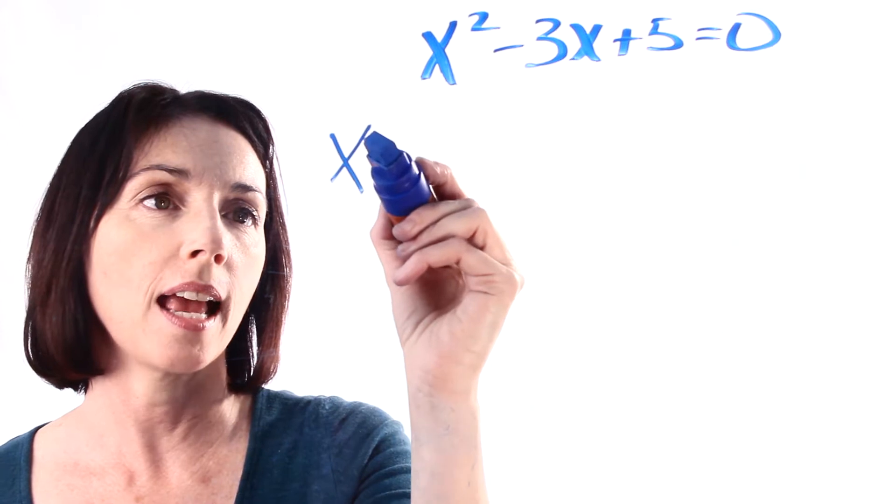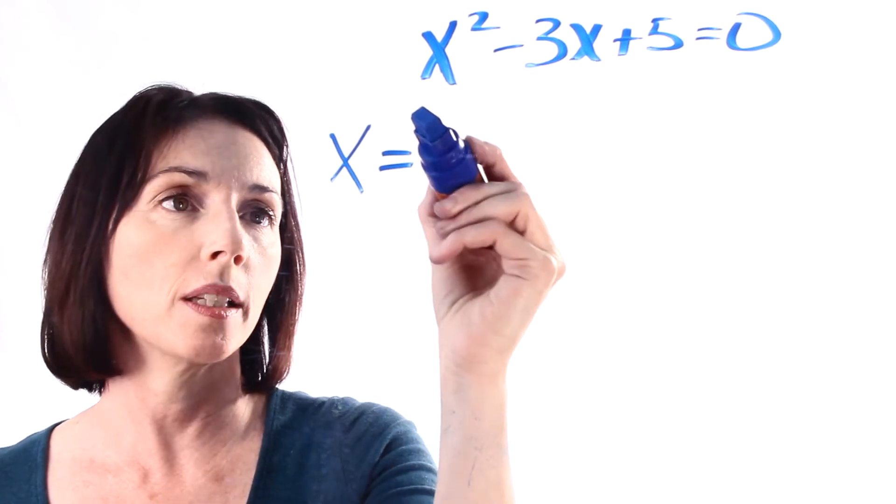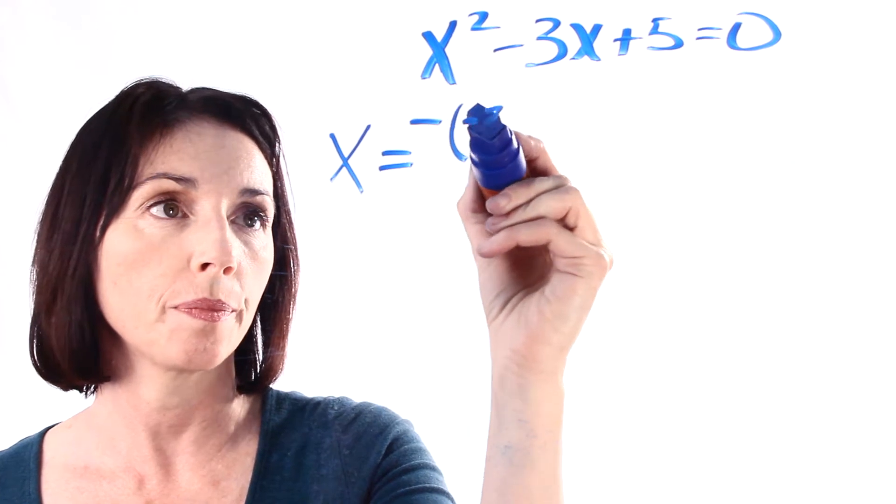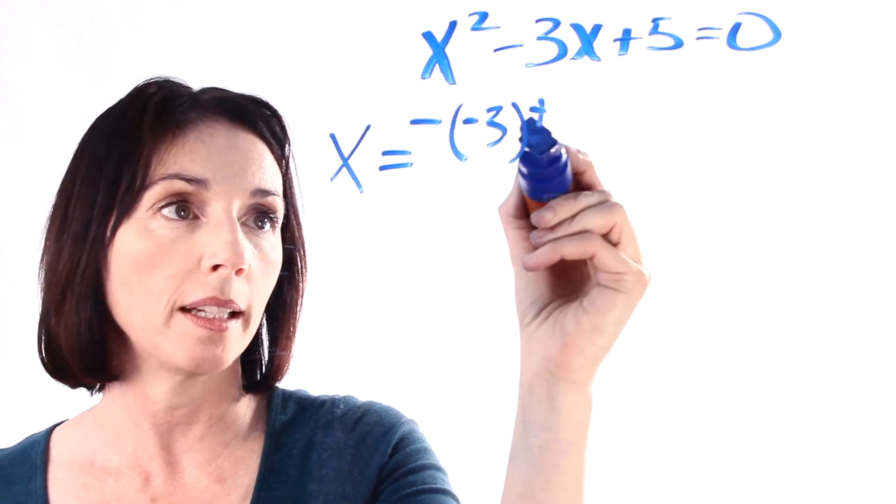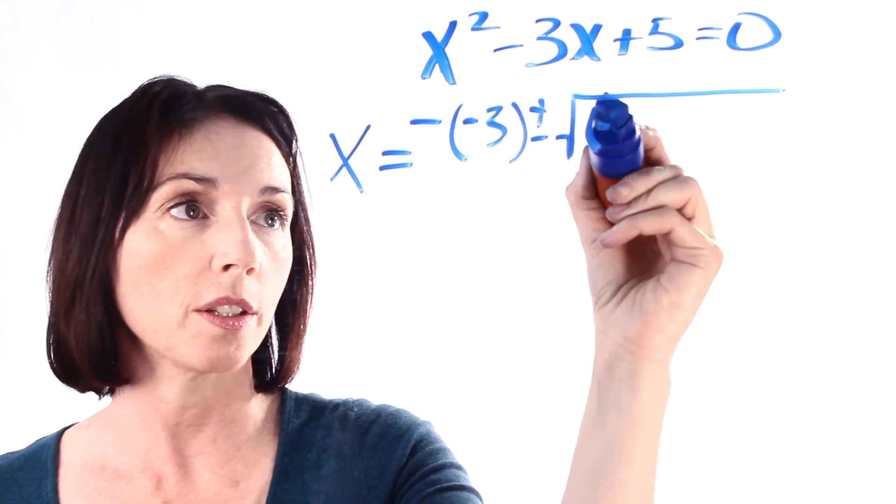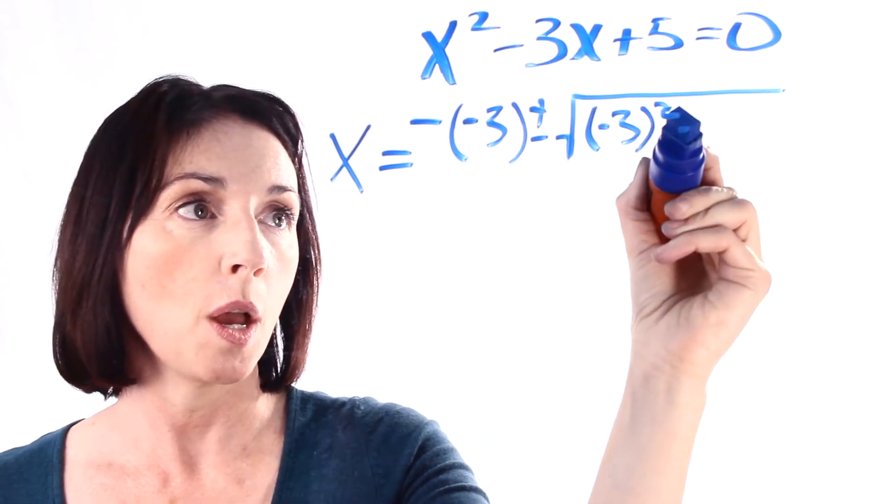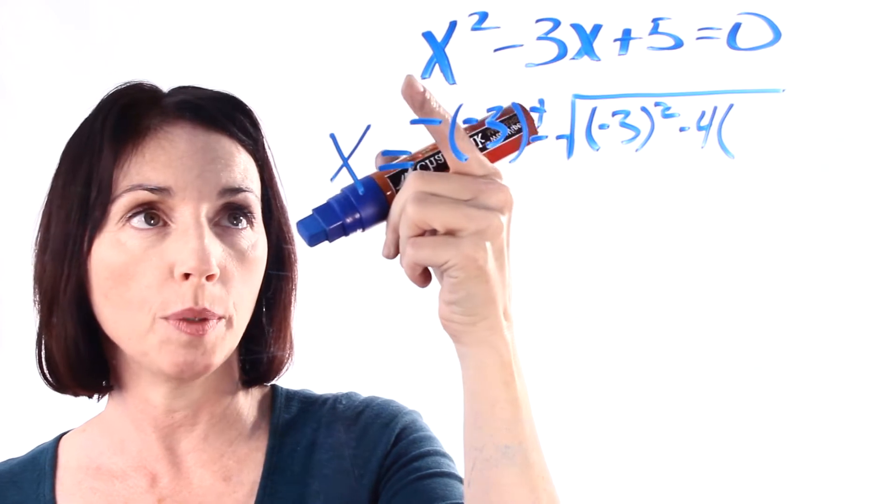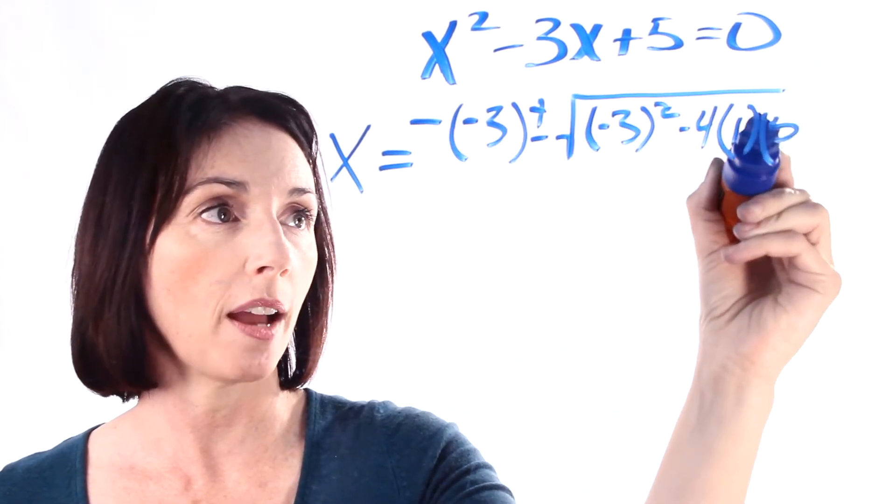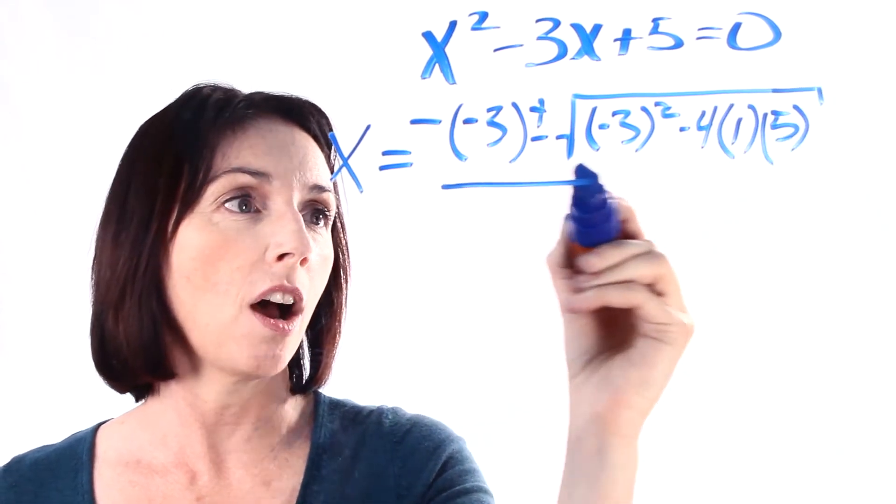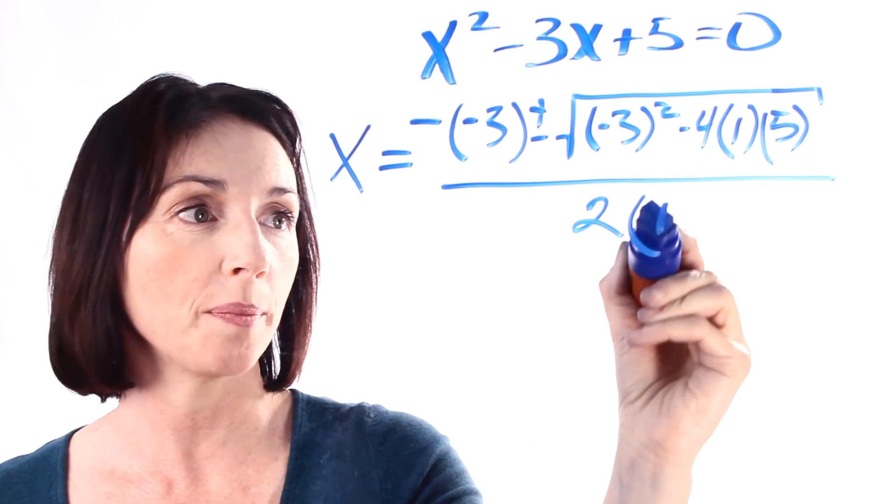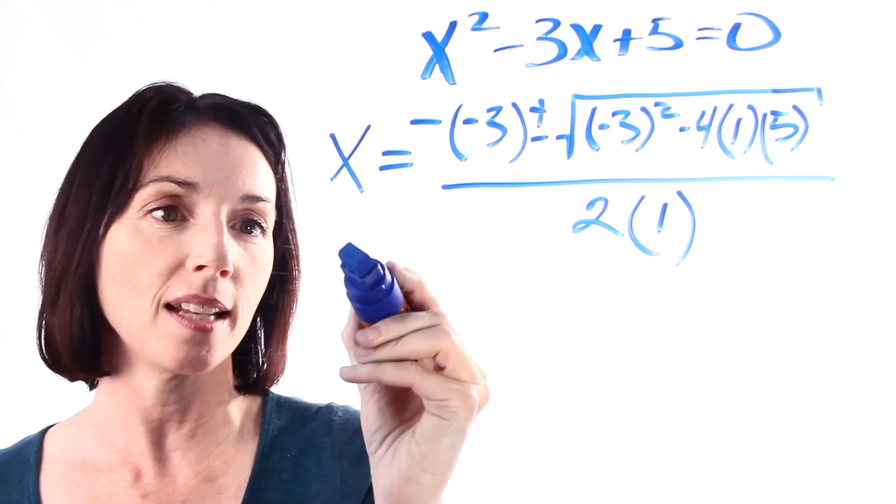So the formula says that x is equal to the opposite or minus of b, and in our case b is minus 3, plus or minus the square root of b squared, so minus 3 squared, minus 4 times a which is 1 times c which in our case is 5. That's all under the square root symbol and all of that is divided by 2 times a, which again a is 1.